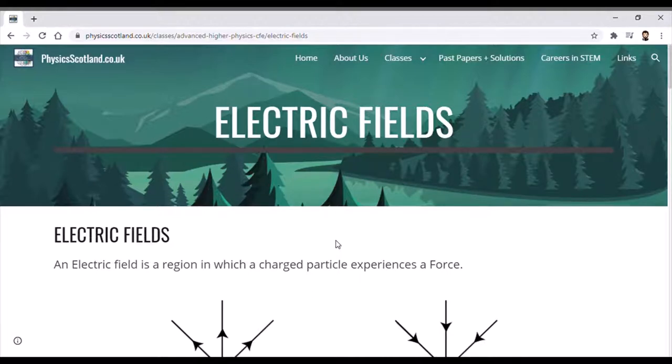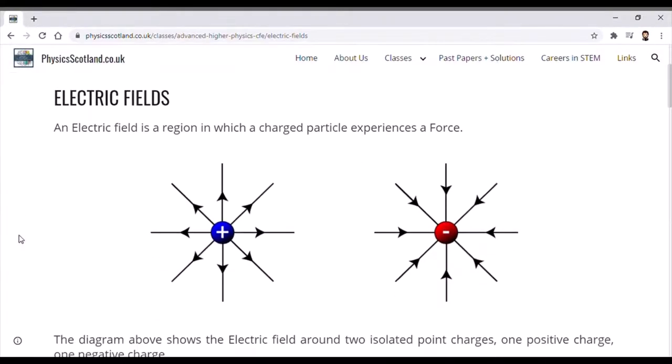We're going to start with the basics, looking at two isolated point charges. This diagram here shows two charges—positive on the left, negative on the right—and their surrounding electrical fields as shown by the electric field lines.